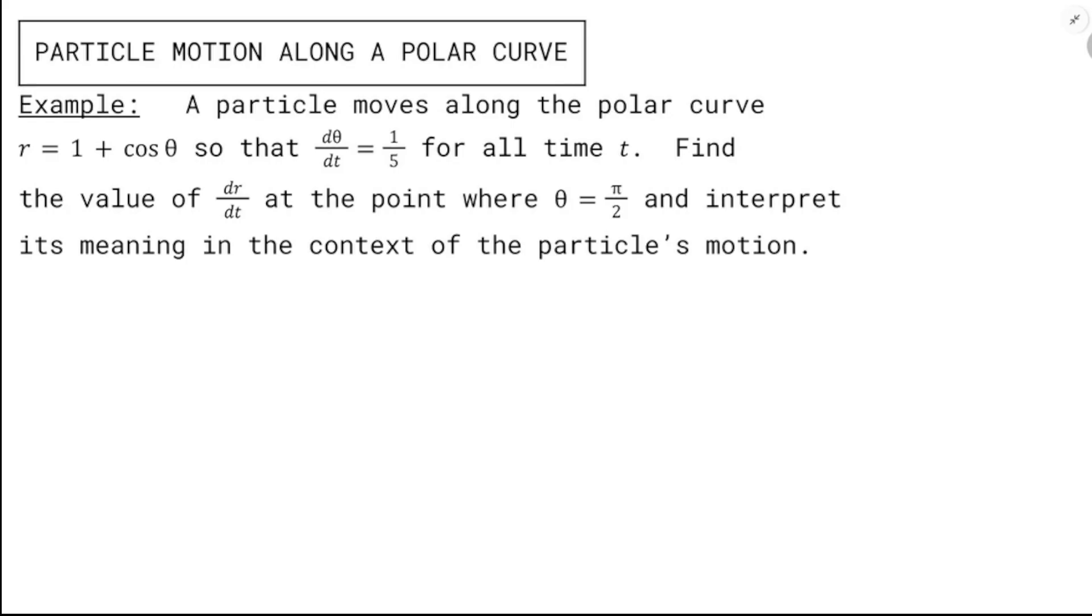So the first one is a particle moving along a polar curve, r equals 1 plus cosine θ, so that dθ/dt equals 1/5 for all time t. Find the value of dr/dt at the point where θ is π/2 and interpret this meaning in the context of the particle's motion. We don't even need to know what this curve looks like in order to solve the problem.